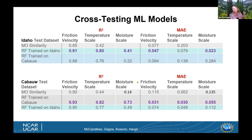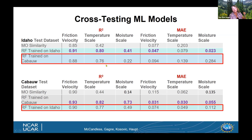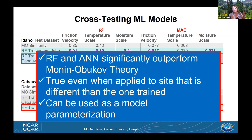Interestingly, if we take the model trained on the Cabauw site and apply it to Idaho, we still get an improvement. The conclusion: random forests and neural nets can significantly outperform Monin-Obukhov theory, even when applied to a site different from the one it was trained on. We have been testing it in the Weather Research and Forecasting model, finding that we can use it as a surface layer parameterization. There are complications since Monin-Obukhov theory is used in several different places, so it's complex to change the models, but it's possible.